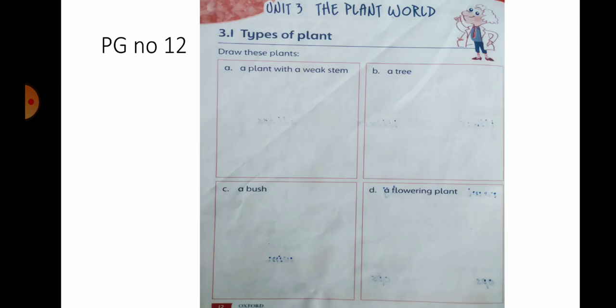Students, open your books of science, workbooks. Page No. 12, Unit No. 3, The Plant World. Aaj ham da Plant World ki workpages karenge. Saab se peahle Types of Plant. Yaha ap loogon ne 4 pictures draw karne hai. A plant with the weak stem, a tree, a bush and a flowering plant.